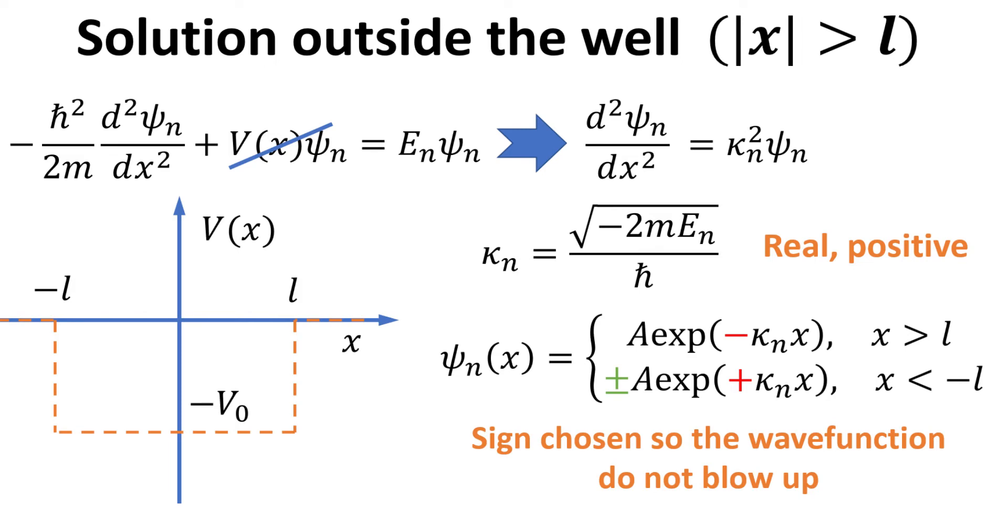The solutions to this second-order differential equation are real exponential functions as shown. The exponents can have positive or negative signs, and the signs are chosen so the solution does not blow up, meaning the function has a finite integrated area. For example, when x is larger than l, the exponent should have a negative sign, so that the function decays exponentially outside the well.